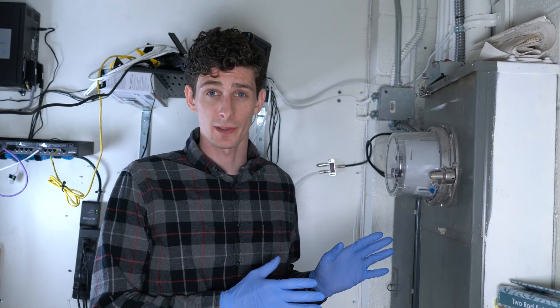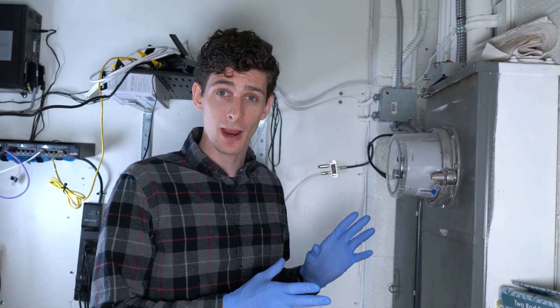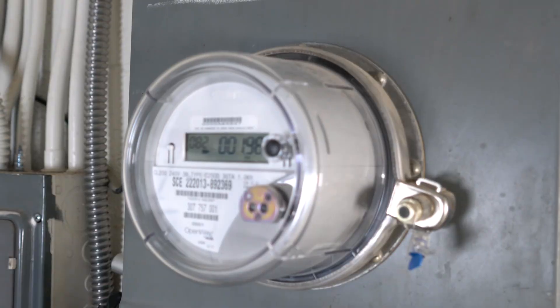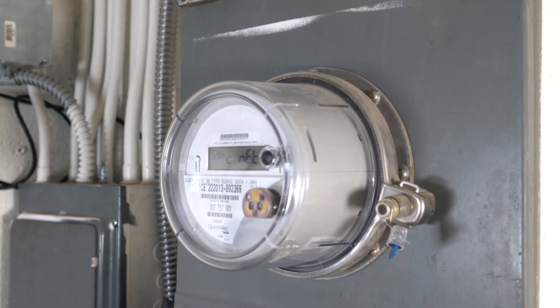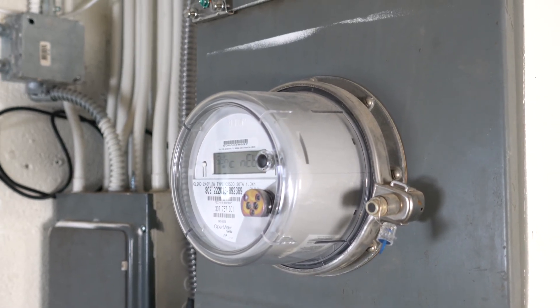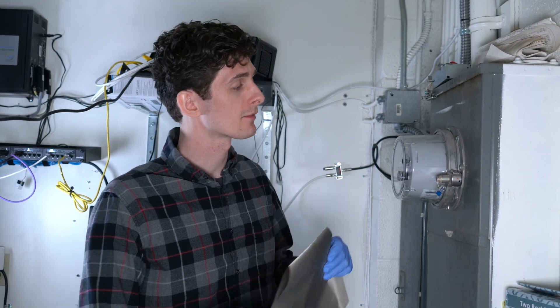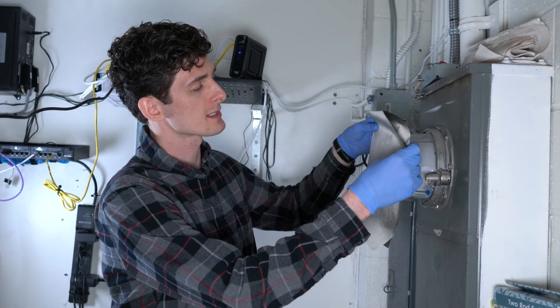Okay, so now that we're at our smart meter, I'm going to show you how to cover properly. Again, the reason why we're doing this is we want to protect ourselves from harmful RFs the meter emits. So the first thing you want to do is take your Faraday fabric and line it up with the center of the meter.